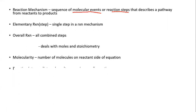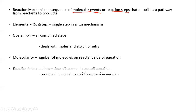Molecularity describes the number of molecules on the reacting side of the equation for each elementary step. By looking at the number of molecules on the reacting side, you can determine the molecularity. In some reaction mechanisms, we may produce and consume species not in the overall equation — these are called reaction intermediates. A reaction intermediate gets produced in one step and consumed in another, and should not show up in the rate law.